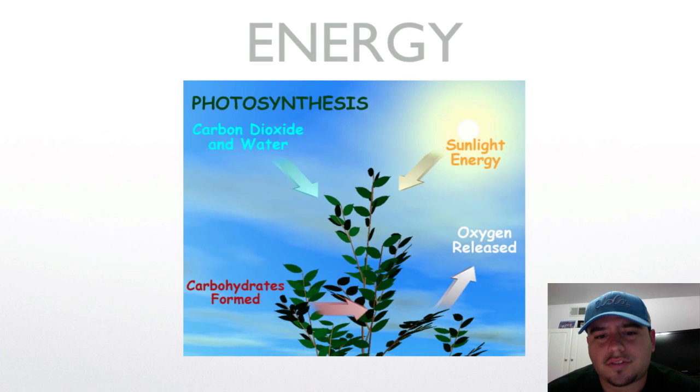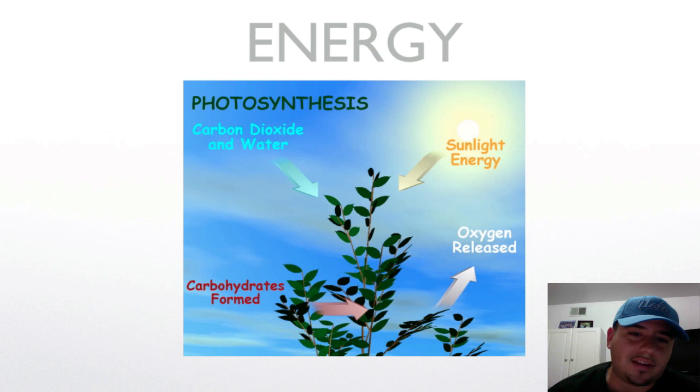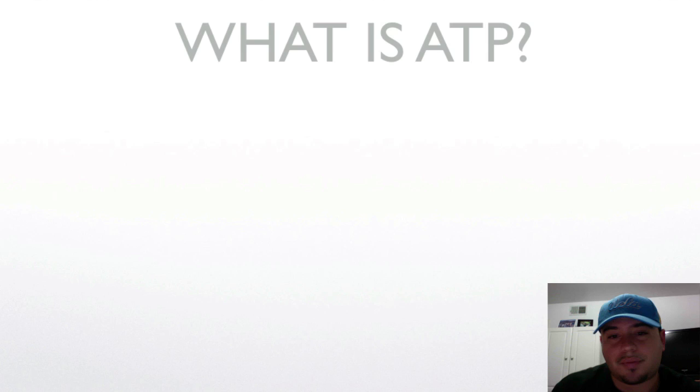Today we're going to be learning about photosynthesis and cellular respiration. We know it has to do with energy. We know photosynthesis has to do with sunlight, water, and carbon dioxide, and making glucose and oxygen, or other carbohydrates. So let's take a look at that process.